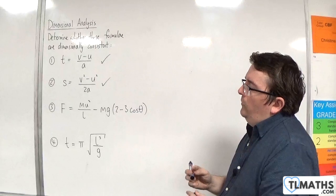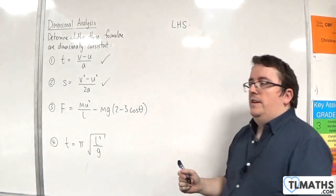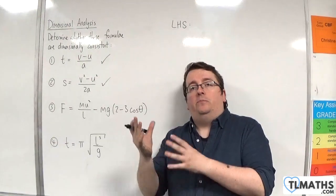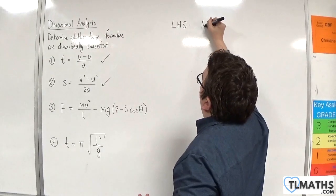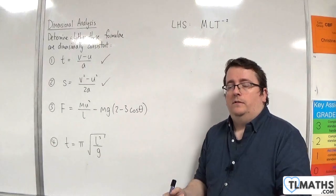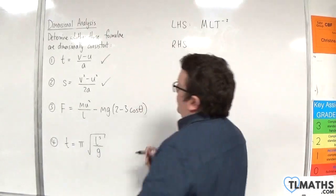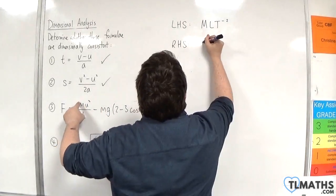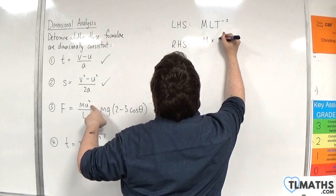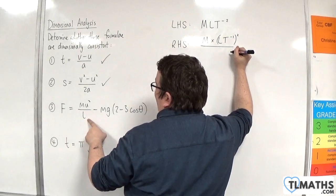Now number 3. On the left-hand side we have a force. If you can't remember what a force is in terms of M, L, and T, remember that force equals mass times acceleration — so M times LT⁻², metres per second per second. On the right-hand side we have m, a mass, times velocity squared — velocity squared is (LT⁻¹)², divided by a length L.